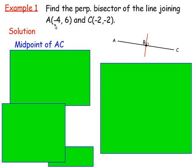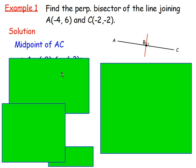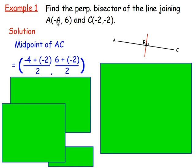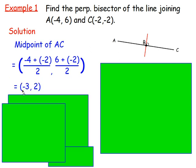And to do that, add the x values together and then half them and then add the y values together and then half them. So doing that, you would have negative 4 adds negative 2 and 6 adds negative 2. If you do that and then half them, you would get negative 3 and you would end up with 2. So that's how you worked out that midpoint. That's how you've got point B.